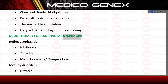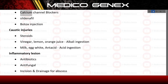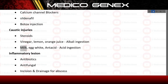Drug therapy for esophageal dysphagia: Reflux esophagitis — H2 blockers, antacids, metoclopramide, domperidone. Motility disorders — nitrates, calcium channel blockers, sildenafil, Botox injection. Caustic injuries — steroids; for acid ingestion: vinegar, lemon, or orange juice; for alkali ingestion: milk, egg white, antacid. Inflammatory lesions — antibiotics, antifungals, incision and drainage for abscess.